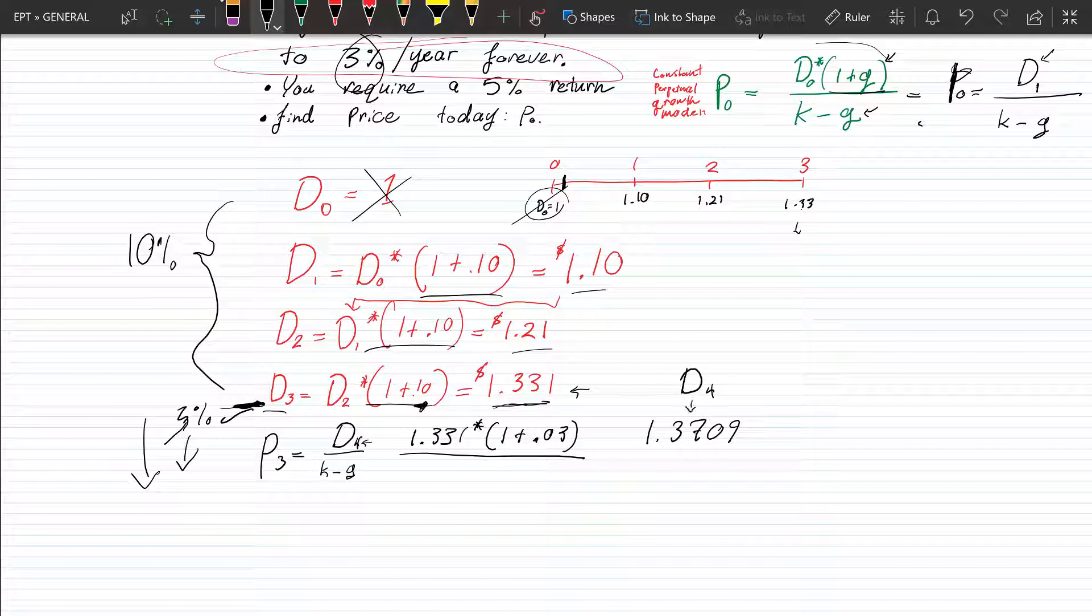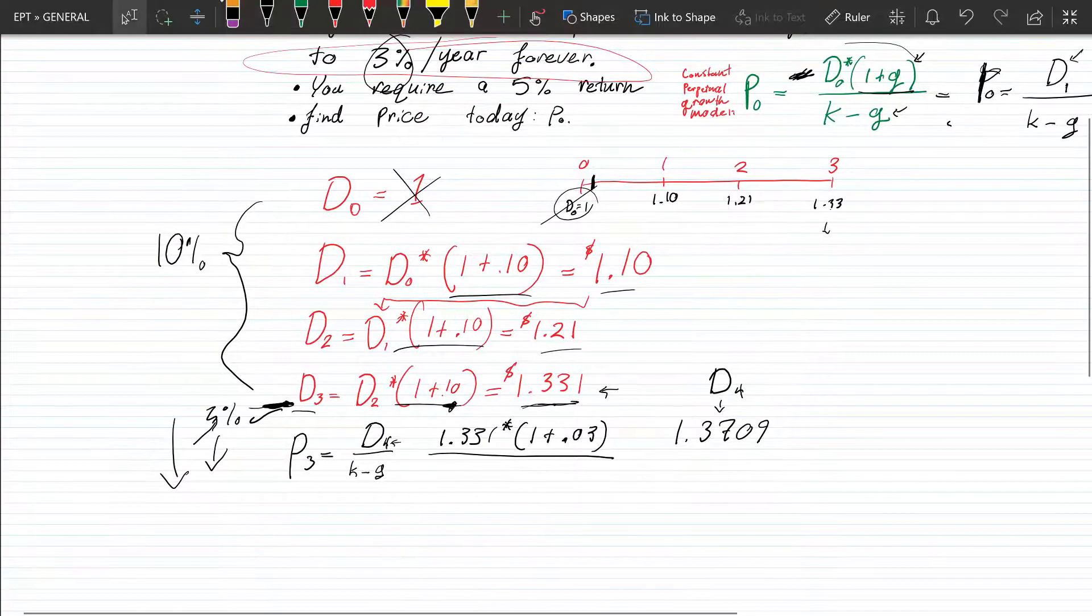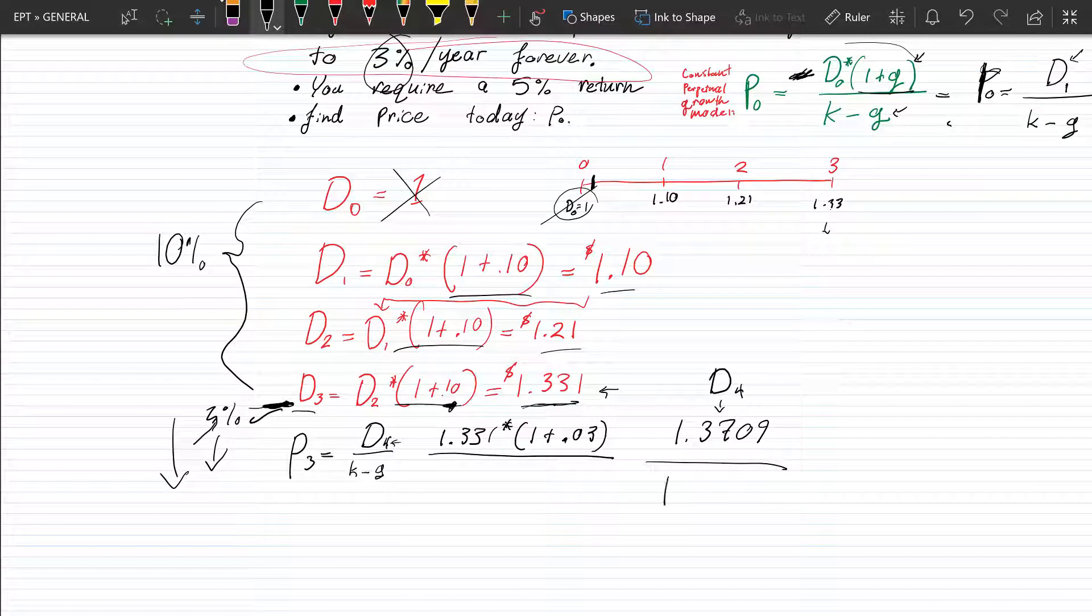It's irrelevant to us because we're only observing through T of three, but this is for our calculation purposes, what we will be plugging into the top right here. So we got that number. And then on the bottom, we got K minus G. Okay.